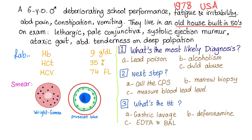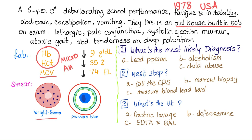There is also an ataxic gait, indicating a neurological problem, and abdominal tenderness on deep palpation. Lab results: hemoglobin is 9 (low), hematocrit is low, MCV is low — so we have microcytic anemia. On the peripheral smear using the Wright-Giemsa stain, we find basophilic stippling of the red blood cells.